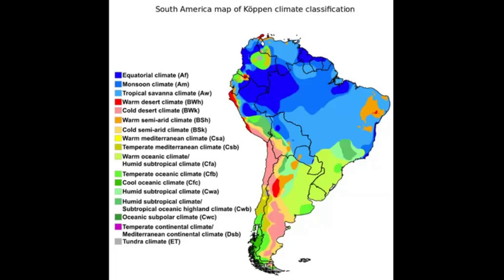Starting in with the north, right through here, we have the equator coming right through here. That makes sense — we're going to find our A climates. A, we think of as tropical, so warm and moist. And so subsequently, our Amazon rainforest is found here.